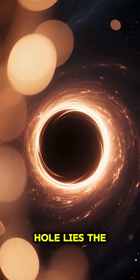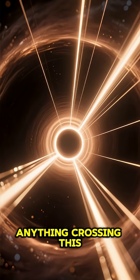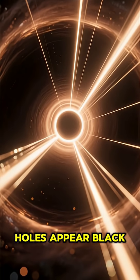At the edge of a black hole lies the event horizon, a point of no return. Anything crossing this boundary, even light, cannot escape. That's why black holes appear black.